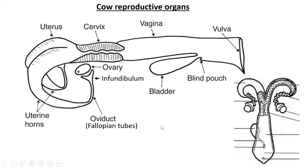You don't have to be able to sketch the reproductive organs, but they will give you a picture — either the side view or the top view — and ask you to label the different areas. You must know the names, and in the next slide we're going to talk about the functions of each of these areas.